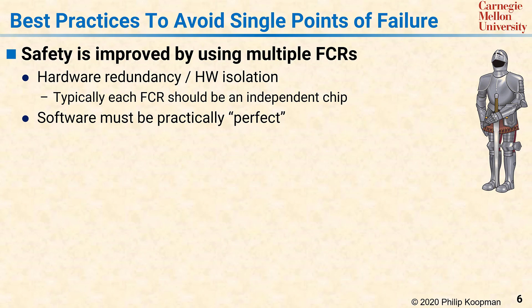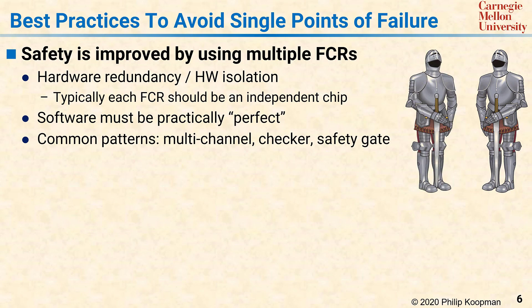A pattern commonly used in mission-critical embedded systems is the multi-channel architecture, typically in the form of a two-of-two cross-checking pair. The second commonly used pattern is the doer-checker pattern. A third pattern sometimes used is the safety gate added to a doer-checker pair.